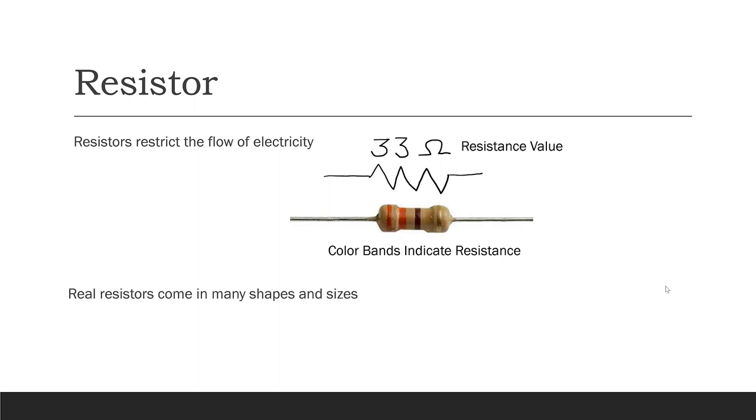Real resistors come in many sizes and shapes. They can be very large or very small, depending on their use. But the physical size does not indicate the resistance. You could have two resistors that are identically sized, one having a resistance of only one ohm, and an identically sized one right next to it having a resistance of a million ohms. So the physical size does not indicate the amount of resistance that the component has.